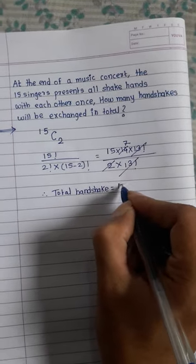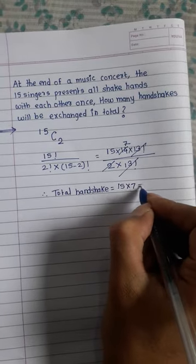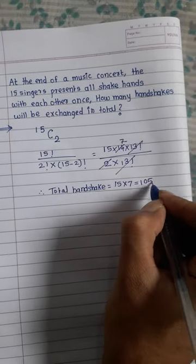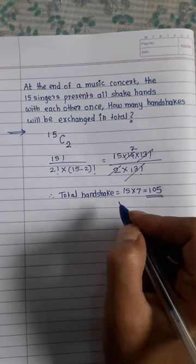is equal to 15 multiple of 7 is equal to 105. Thank you friends, hope you like this video.